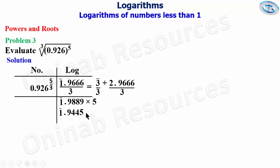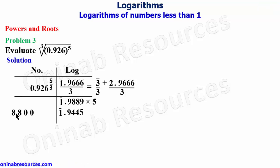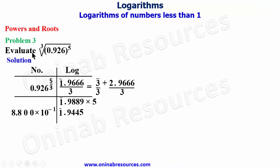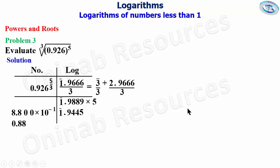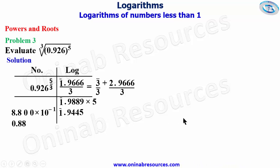We find the anti-logarithm of bar 1.9445. We check 94 under 4, differences of 5, from the anti-logarithm table, giving 8800. We place our point immediately after the first non-zero digit, multiply by 10 raised to bar 1, written as negative 1 — giving the standard form. In ordinary form we have it as 0.88. That's the end of problem three and this tutorial. Please like, share, and subscribe to our YouTube channel. Goodbye!